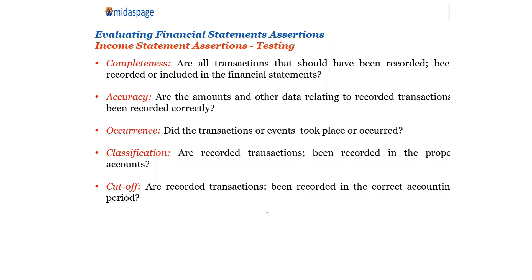In ASOK, you can use these five. One: completeness — are all transactions that should have been recorded, been recorded or included in the financial statements? So we say testing. You are asking questions, you are testing those transactions.